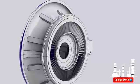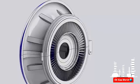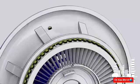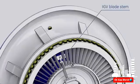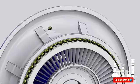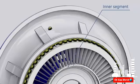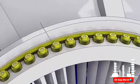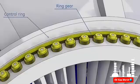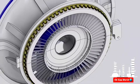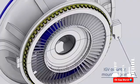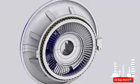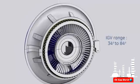Variable inlet guide vanes are located at the aft end of the inlet casing. Their function is to control the amount of airflow across the compressor. The total number of inlet guide vanes is 64 blades. Each blade stem is inserted into a hole machined on the inlet casing, with each four of them supported from below by one inner segment. A pinion gear is installed to each blade stem and keyed into position. These pinions are rotated by a ring gear assembled to the control ring. The control ring is positioned by a hydraulic actuator to obtain the desired inlet guide vane opening angle, which ranges from 34 to 84 degrees.